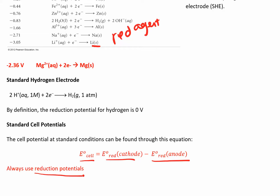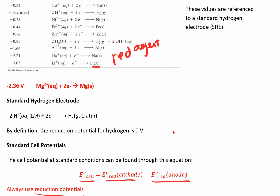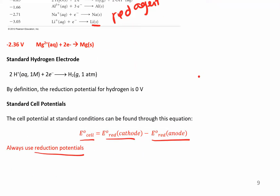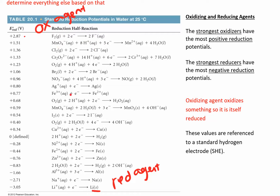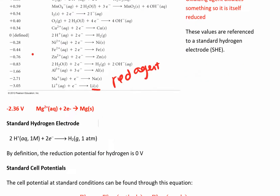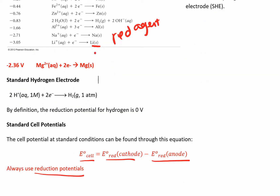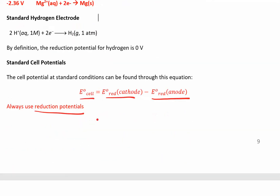We're always using the reduction potential, so you don't have to flip the sign to make it an oxidation potential. Always use the reduction potential: cathode minus anode. When you look these up in the table, your reaction will be split into half reactions — one oxidation and one reduction — but this table only shows reduction potentials. The oxidation half reaction won't appear as written in your reaction, so just find the corresponding species in the table. Don't change the sign; just use the reduction potentials.